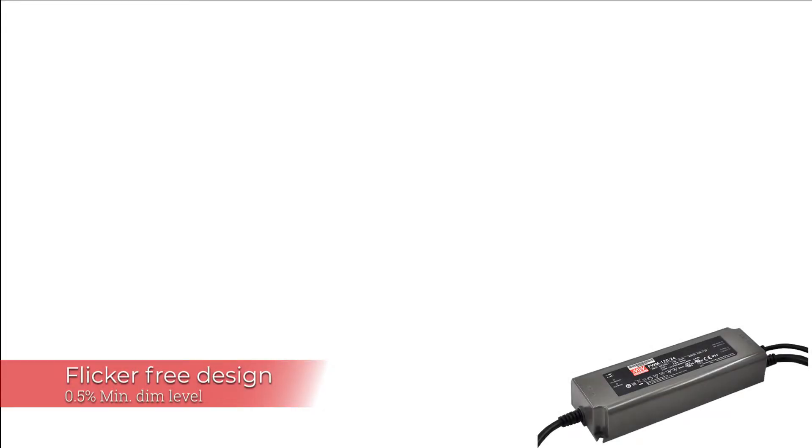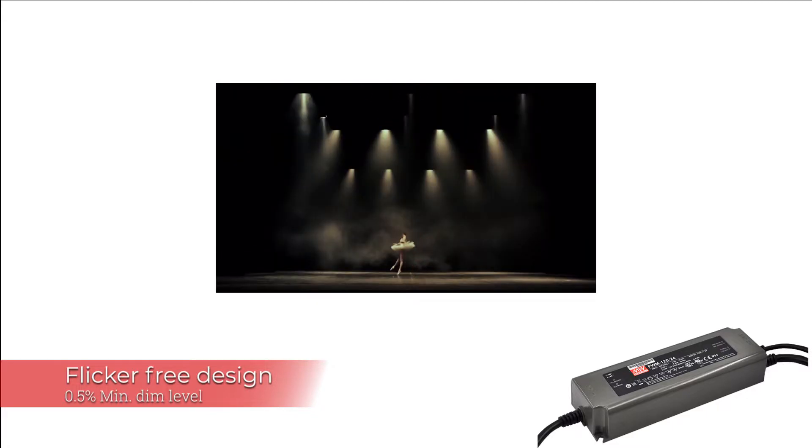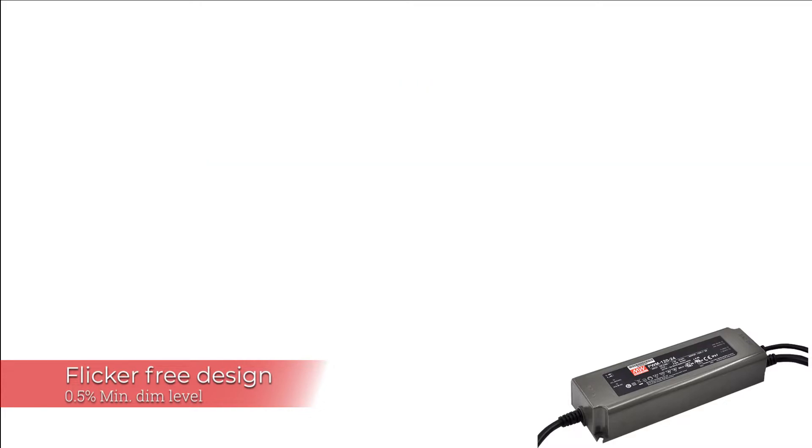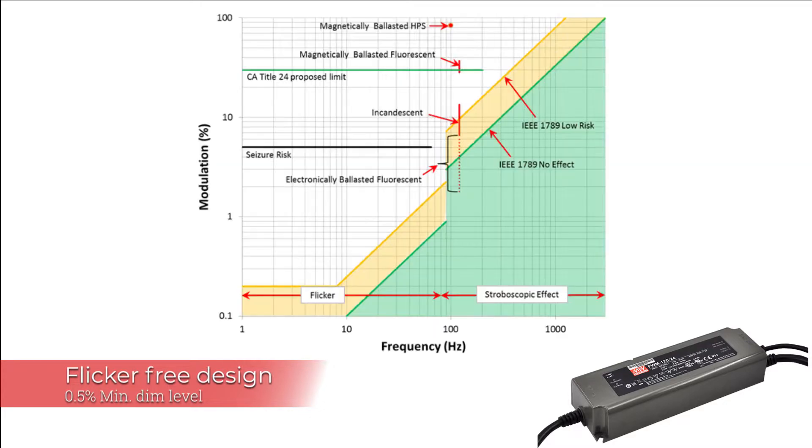The PWM KN series has the minimal dimming level low to 0.5%, which is suitable for low light level environments or applications, for example cinema or theater. The output frequency is changeable up to 4 kHz to comply with IEEE 1789-2015 no risk requirement, providing a great solution for health concerns due to light flickering.